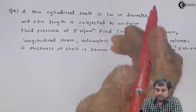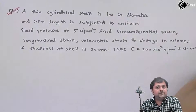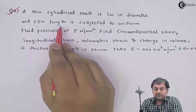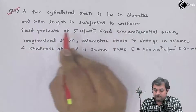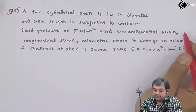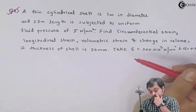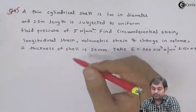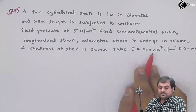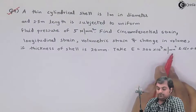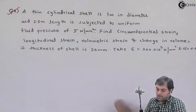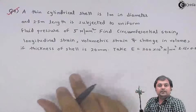Let us take the fourth question. A thin cylindrical shell is 1 meter in diameter and 2.5 meter length, subjected to uniform fluid pressure of 5 newton per mm square. Find circumferential strain, longitudinal strain, volumetric strain, and change in volume if thickness of the shell is 20 mm. Take E = 200×10³ newton per mm square and mu = 0.25. Whatever is given in this question, we will write in data.